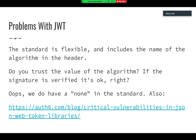There are some problems with JWT historically. The standard is flexible and includes the name of the algorithm in the header. The question is: do you trust the value of the algorithm? If the signature is verified, it seems okay. However, recall that one of the valid algorithms in the spec is "none". So if someone sends you a token with algorithm "none" but claims to be authenticated as a particular user, that doesn't seem like a very secure authentication mechanism.